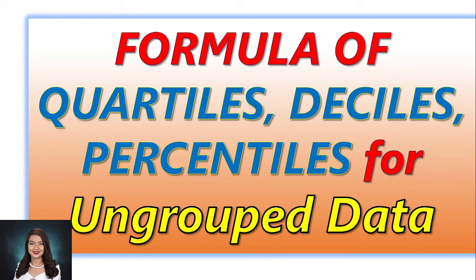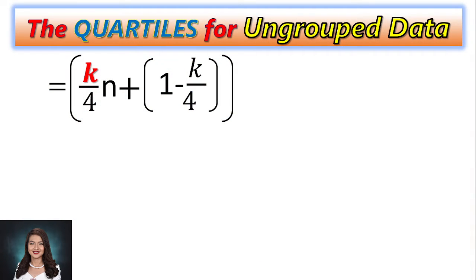You must remember that we have different formulas for grouped data and for ungrouped data. First, let's talk about the quartiles for ungrouped data. Here is the formula: QK is equal to K over 4 multiplied by n, plus the quantity of 1 minus K over 4.